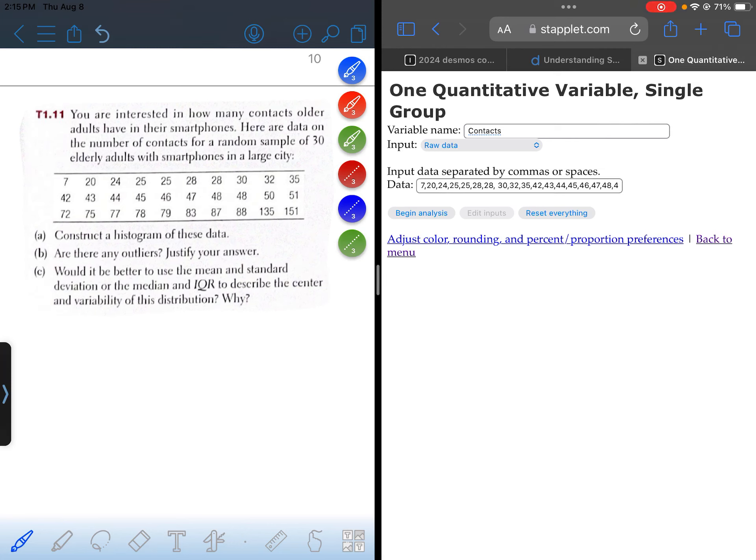Alright, question T1.11. You're interested in how many contacts older adults have in their smartphones. Here are data on the number of contacts for a random sample of 30 elderly adults with smartphones in a large city.